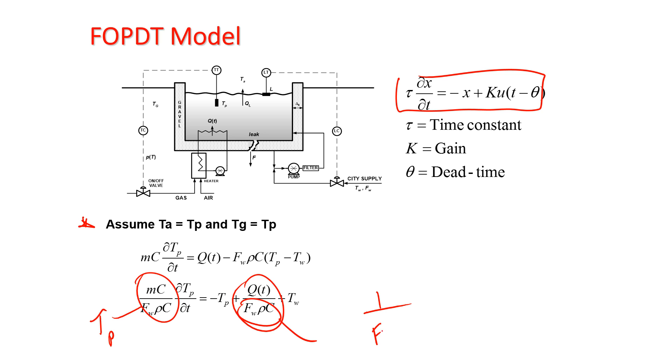1 divided by FW rho C. So that's going to be equal KP, and then I have theta P equals zero. So I came up with the first order plus dead time equation from this fundamental model.